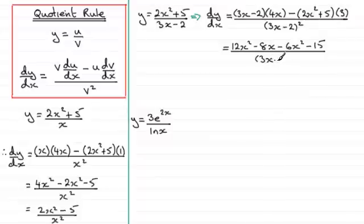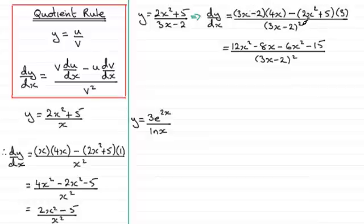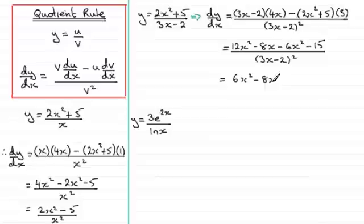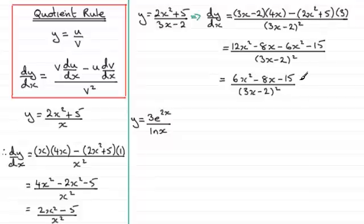Never expand out the denominator in these kinds of questions. And it's very tempting — I see this mistake made many times — where people try to cancel 3x minus 2 from the numerator with the one in the denominator. You can't do that because 3x minus 2 is not a common factor; it's not in both terms. So never make that mistake. Tidying up further: 12x squared minus 6x squared is 6x squared, then minus 8x minus 15, all divided by 3x minus 2 all squared. Sometimes the quadratic expression on top might factorise, and if it does, do try to factorise it.